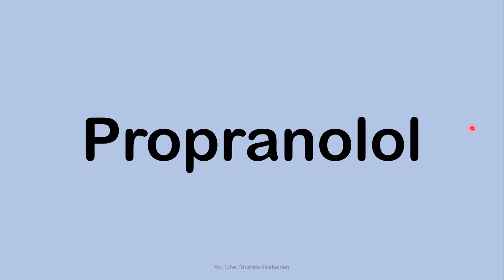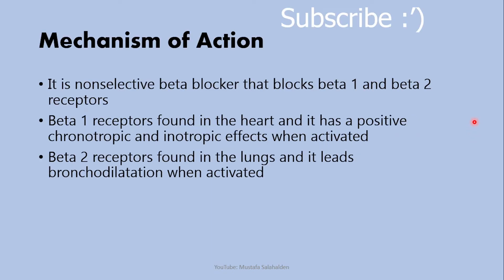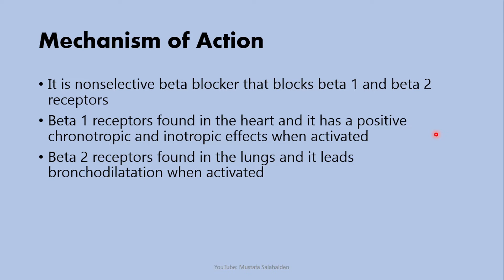Propranolol is a non-selective beta blocker that blocks beta 1 and beta 2 receptors. Beta 1 receptors are found in the heart and have positive chronotropic and inotropic effects when activated — chronotropic means heart rate and inotropic means contractility — leading to increased heart rate and increased contractility of the myocardial muscle. Beta 2 receptors are found in the lungs and lead to bronchodilation when activated.